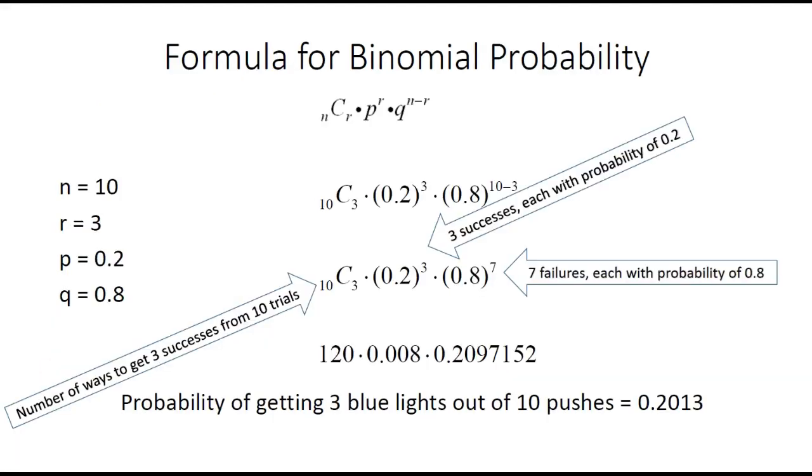Here is the formula for calculating binomial probability. You should recognize the nCr notation as a combination. Basically, you want to take all the ways to get three successes out of ten trials, then you multiply it by the respective probabilities.